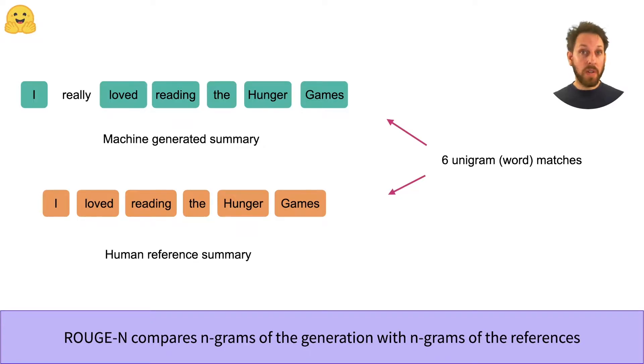So how can we measure the quality of a generated summary in an automatic way? The approach that ROUGE takes is to compare the N-grams of the generated summary to the N-grams of the references. An N-gram is just a fancy way of saying a chunk of N words. So let's start with unigrams, which correspond to the individual words in a sentence.